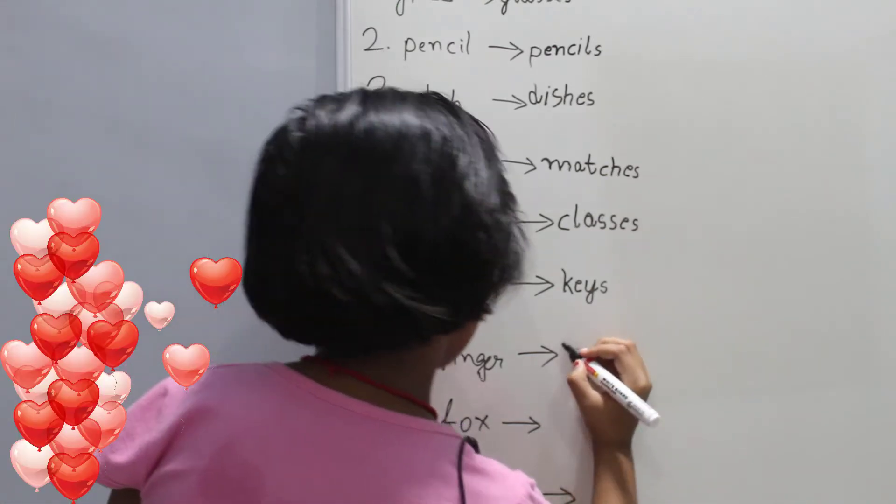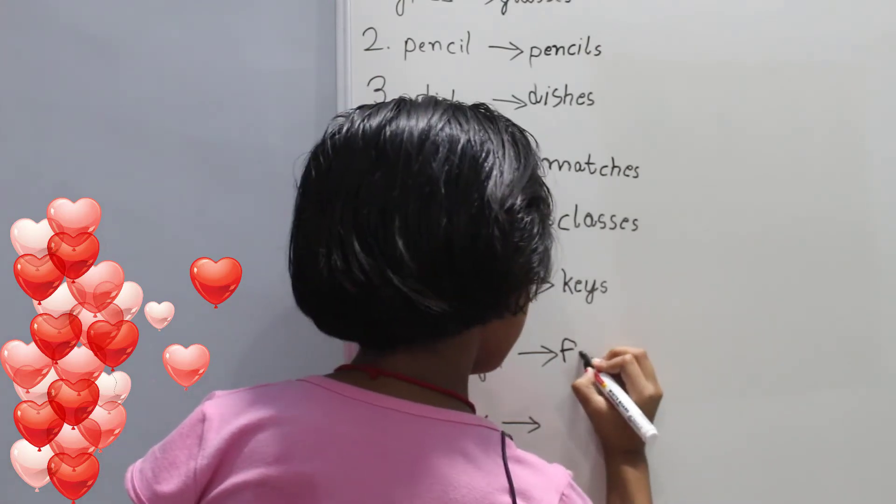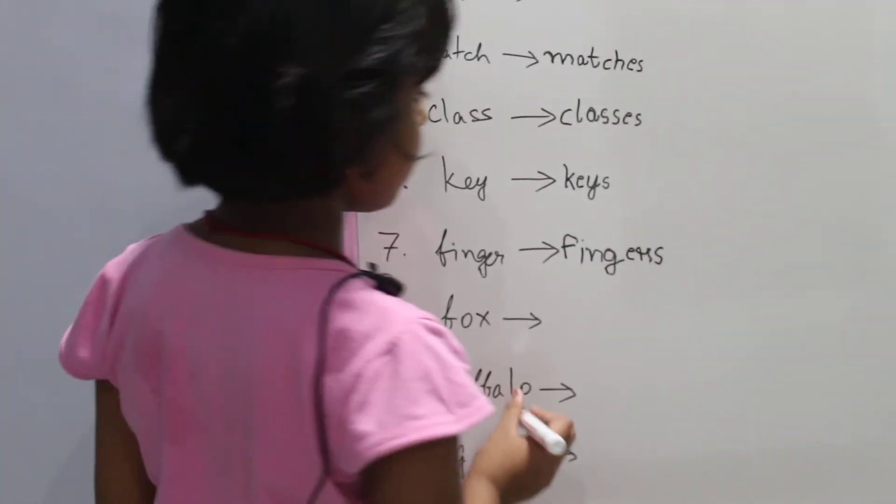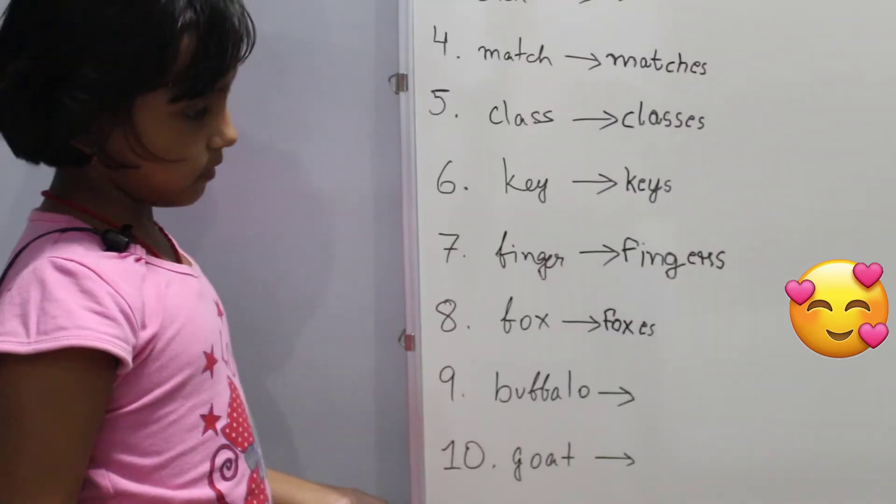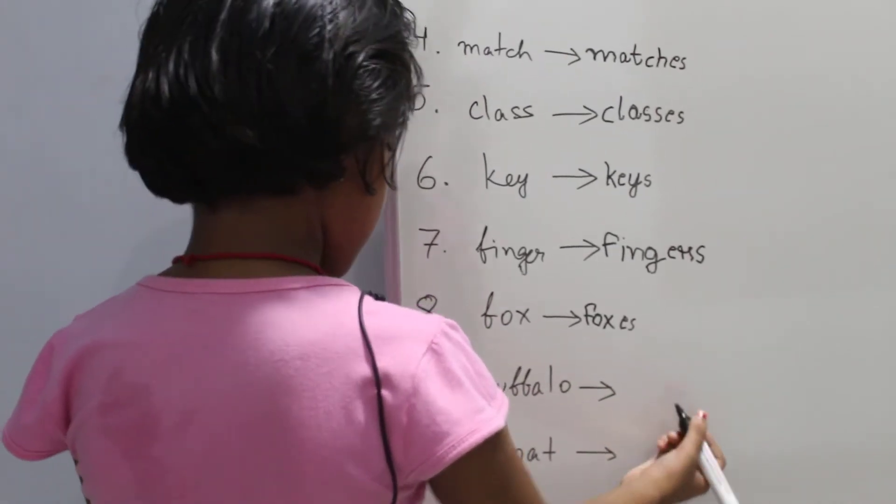Then seven number is fingers. So this answer is fox. Foxes.